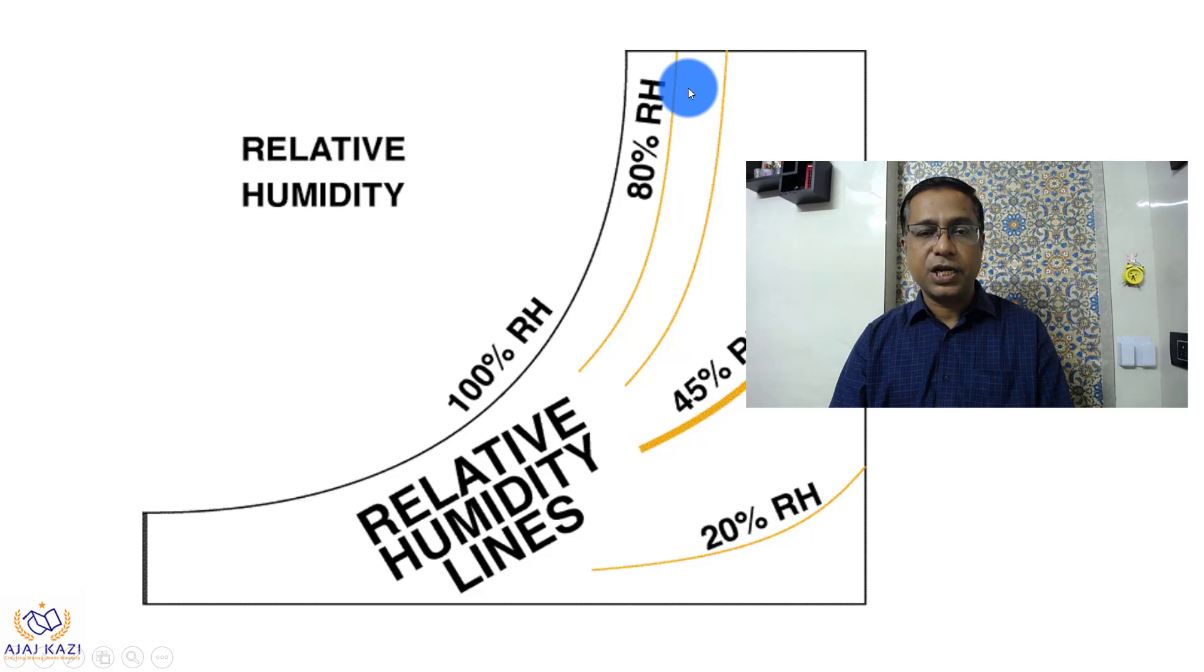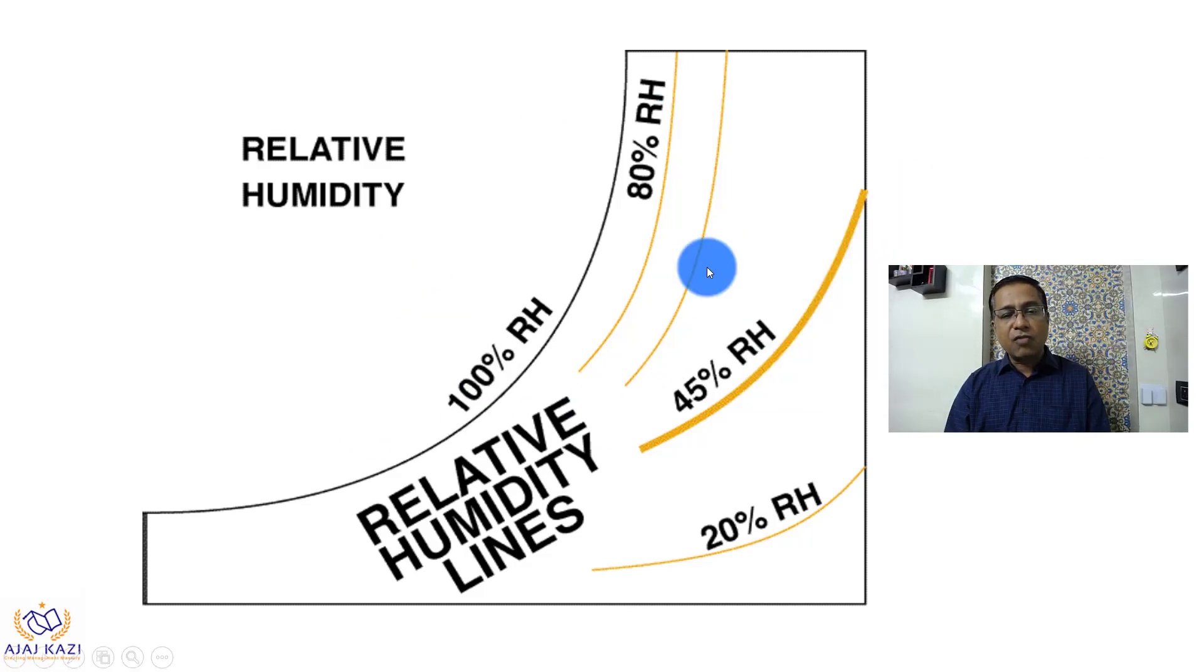These are the parallel curves which denote the relative humidity. This is 20 percent, this is 45, this is 80 percent. The last one is 100 percent. So this is the relative humidity.